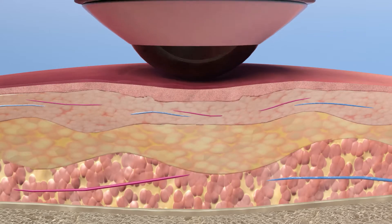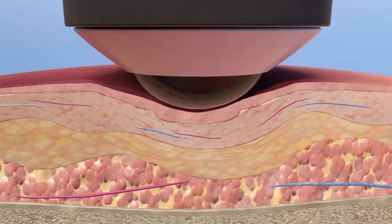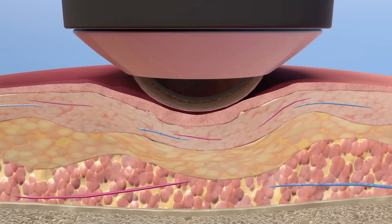A large convex treatment head can be used to compress superficial tissues, displacing excess fluid and enhancing laser penetration to deep structures.